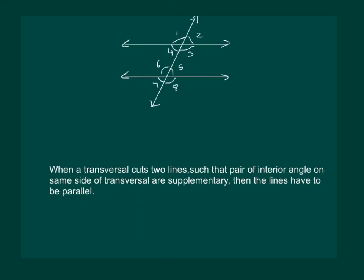Or what we can do is we can measure angle 3 and angle 5 and check if angle 3 plus angle 5 is equal to 180 degrees or angle 4 plus angle 6 is equal to 180 degrees. Then we can say that the 2 lines are parallel.